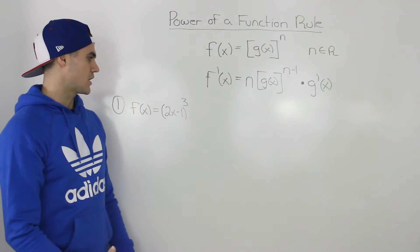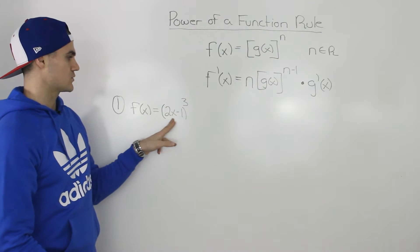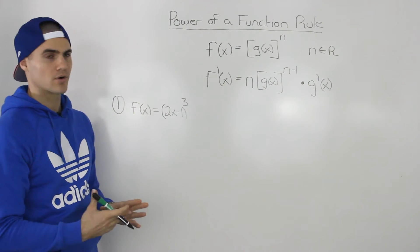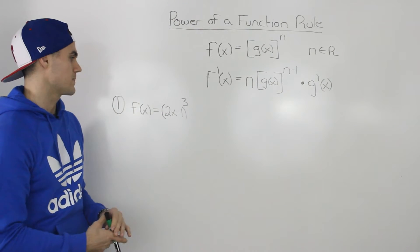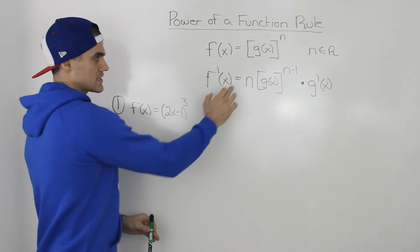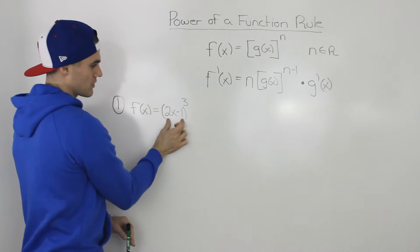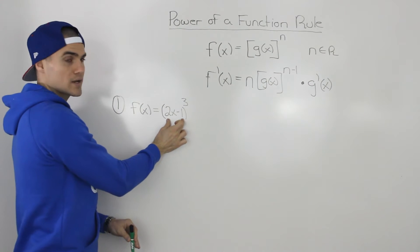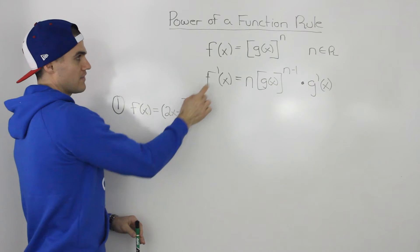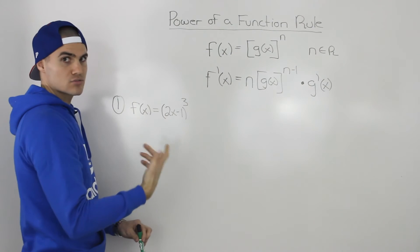Let's do a couple of examples to illustrate this. Let's say we have f(x) = (2x - 1)³. Notice how this f(x) is the same as the format here — this g(x) represents 2x - 1, and then the n value in this case is 3.